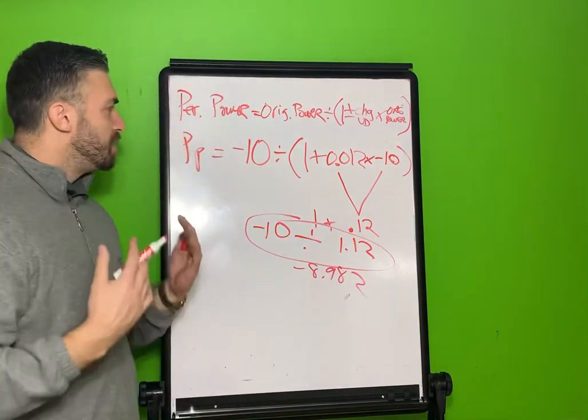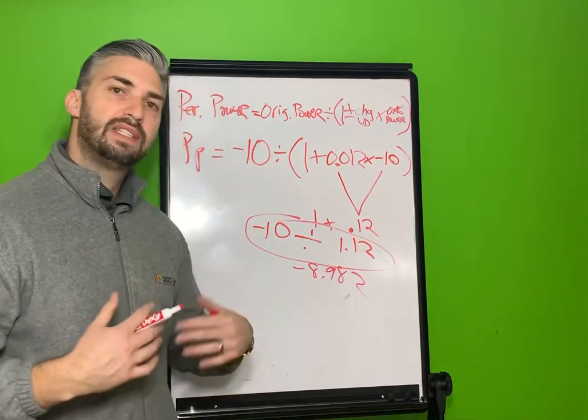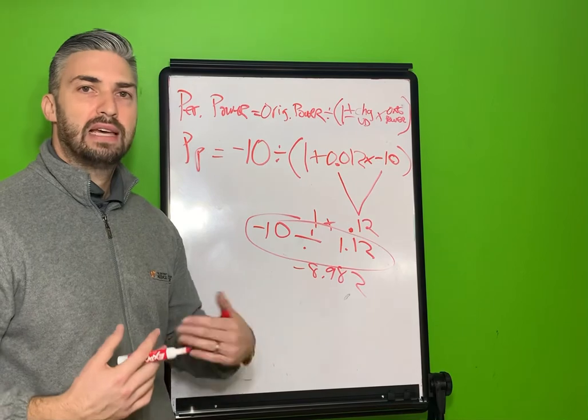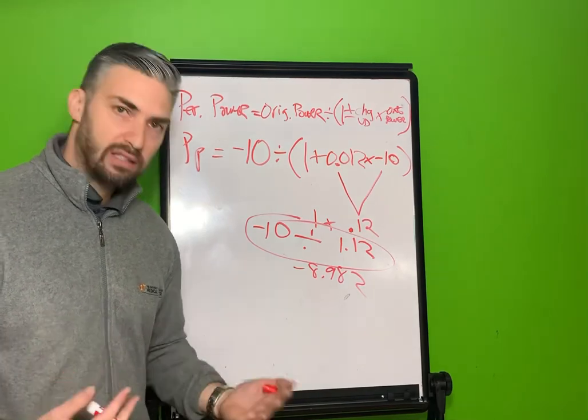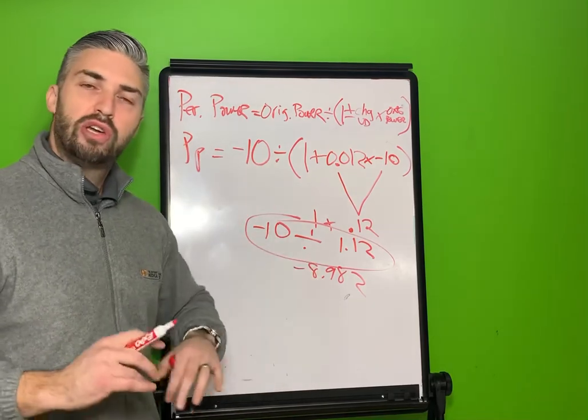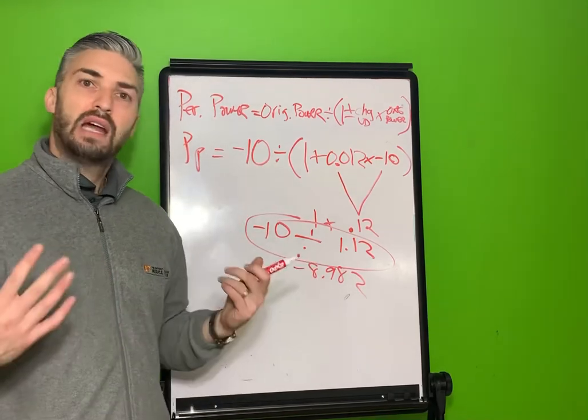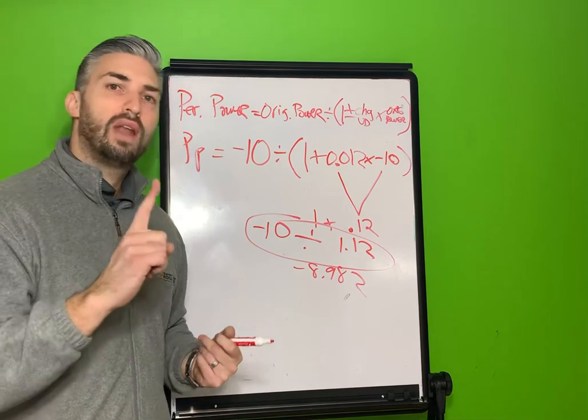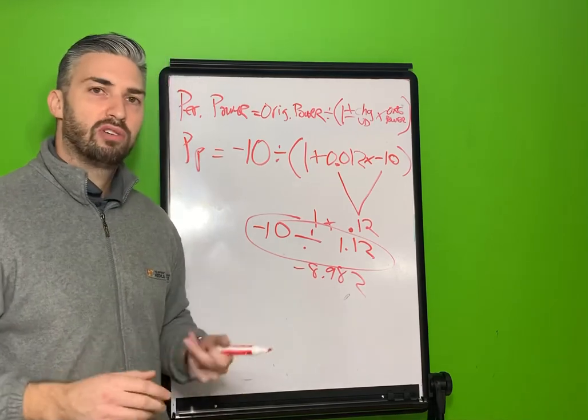So the perceived power of a negative 10 lens behaves as a negative 9 lens would in contact lens form. So I use that example purposely so you can remember that it takes 10 diopters of strength to change just one diopter, and that will help you on your examination.